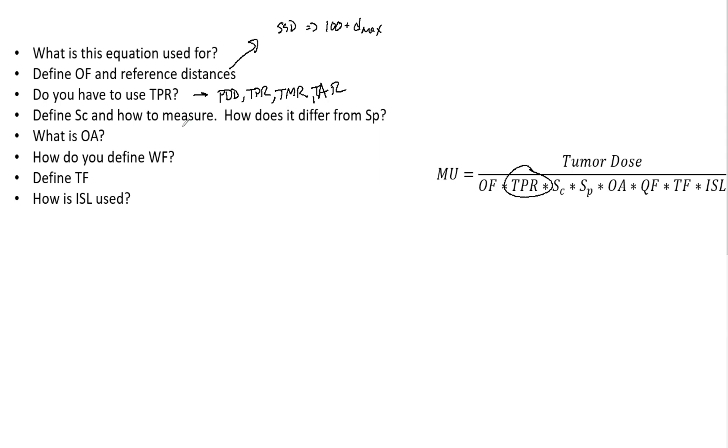There is a difference, mind you, between a 10 by 20 field and a 20 by 10 field. And in fact, there's actually a difference of about 2% in scatter. So it's a decent amount, and that is why we have to have this scatter factor based on the size of the field and the jaws.